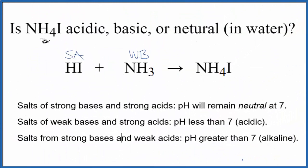Now we can use our rules here to figure out whether NH4I is acidic, basic, or neutral when it's dissolved in water. We have a strong acid and a weak base. Here's a strong acid and a weak base. pH should be less than 7. That'll make this acidic.